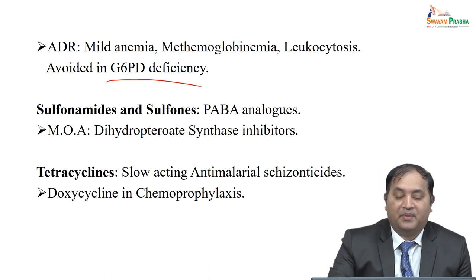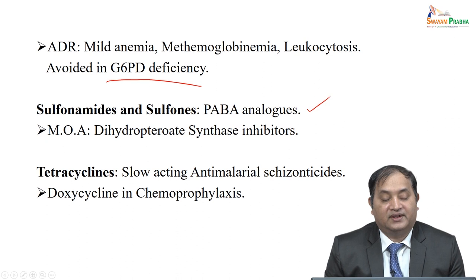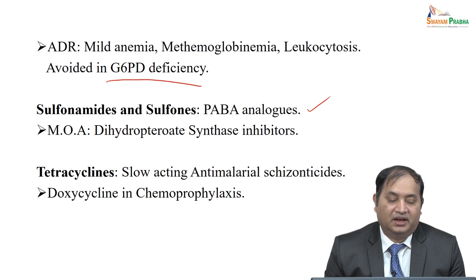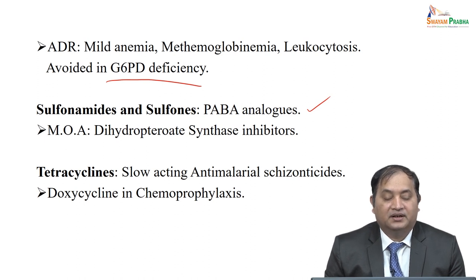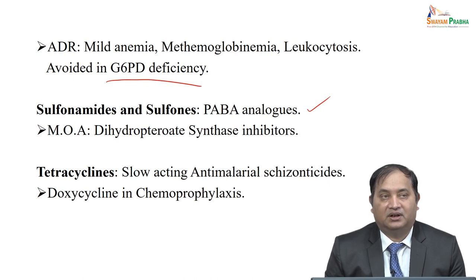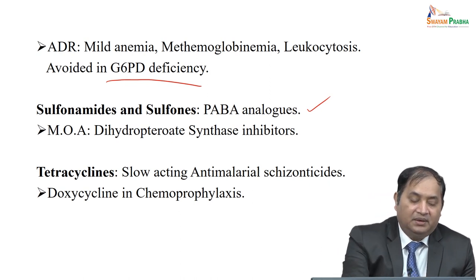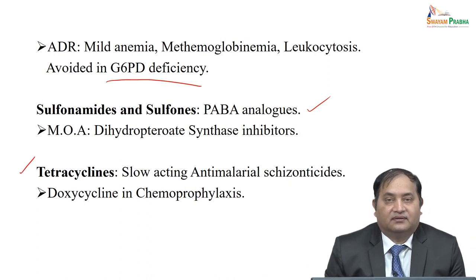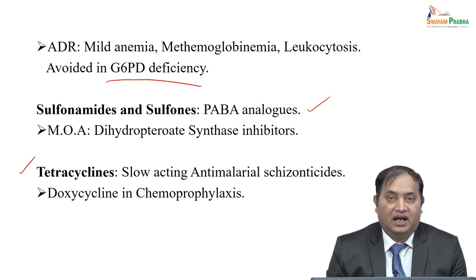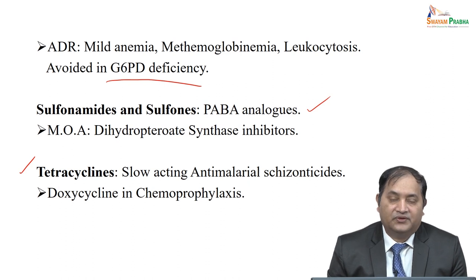Another group is PABA analogs — para-aminobenzoic acid, sulfonamides, and sulfones. For any sulfonamide group of drugs, take a detailed history of allergy, as hypersensitivity is very common. These drugs inhibit dihydrofolate synthesis — that is how they act as anti-malarials. Tetracycline is a slow-acting anti-malarial schizonticide, and doxycycline is commonly used as prophylaxis.